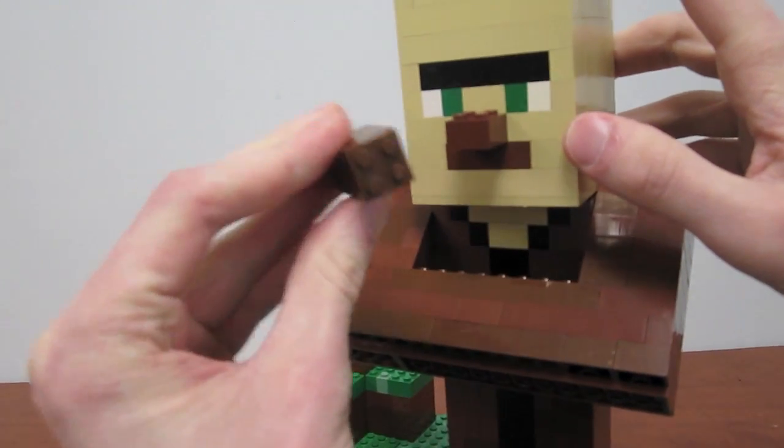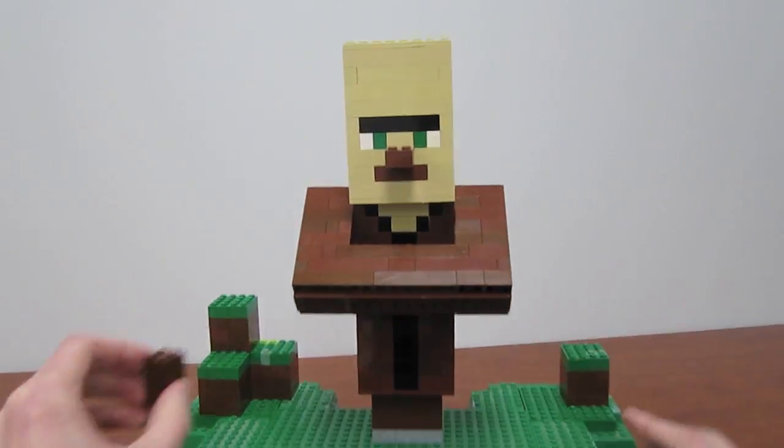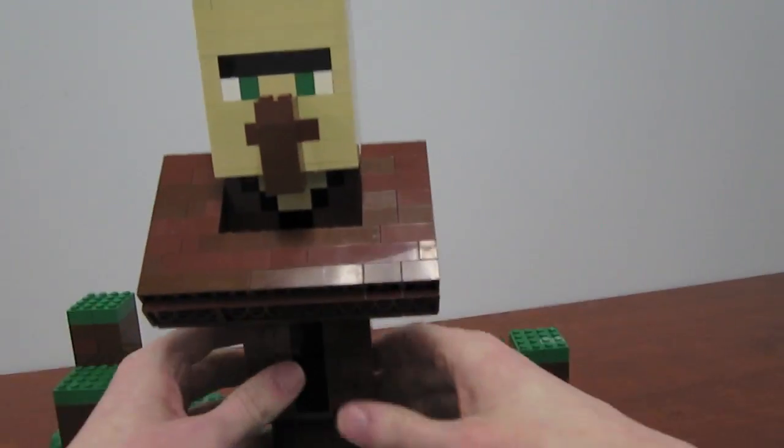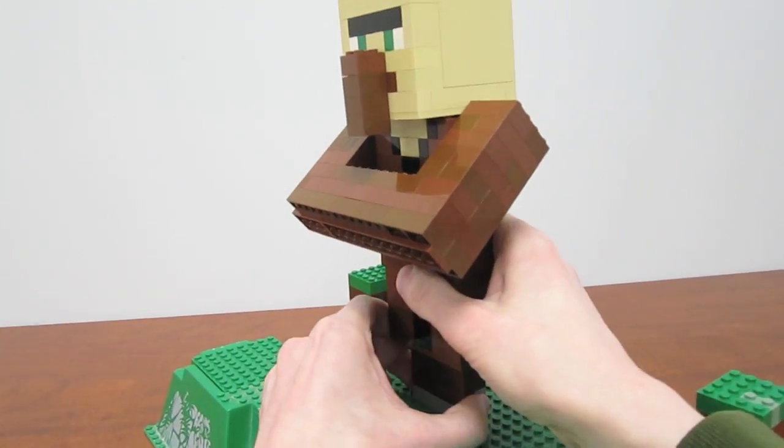If you guys want to build one of these, of course the main colors are tan, black, and brown, but mostly brown. The head is 8 studs by 8 studs, and the body is 8 studs by 4 studs.